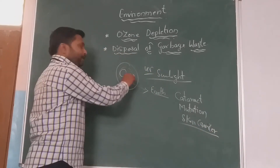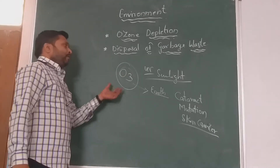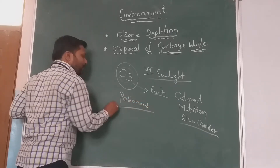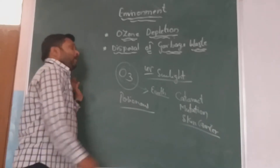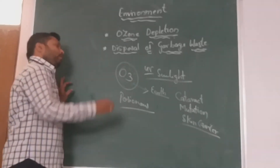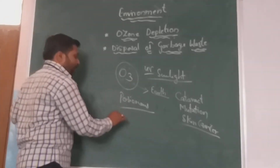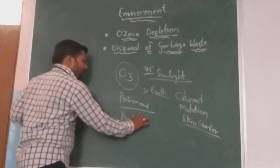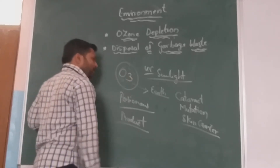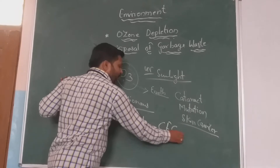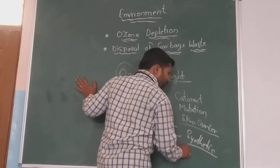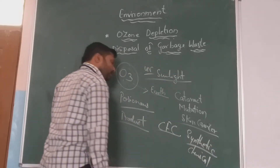When ozone enters into the earth's surface it becomes poisonous. In addition to this, O3 has the attraction of being poisonous when it enters the earth's surface. Otherwise, it is not poisonous, because it acts as a protective layer to the earth's surface. The main causes are a synthetic chemical discharge which we are continuously using, also used in cultivation.